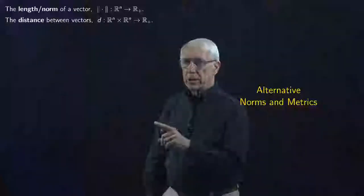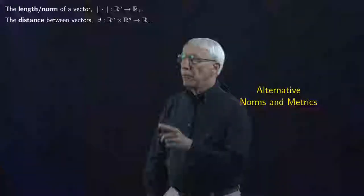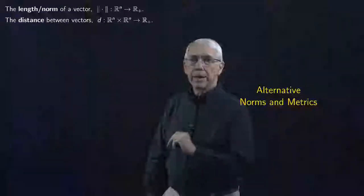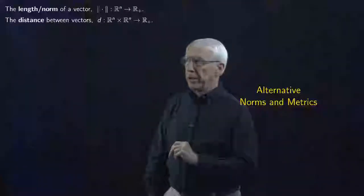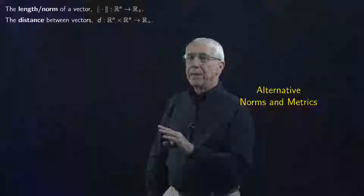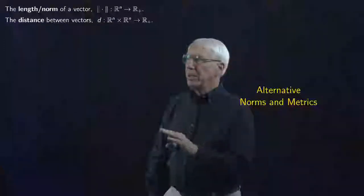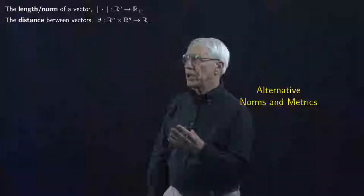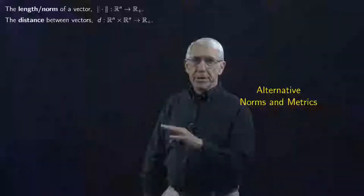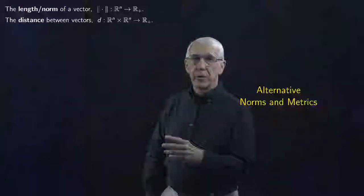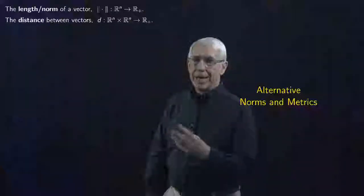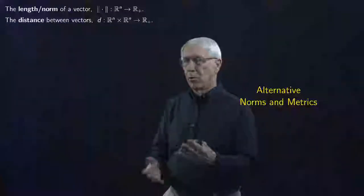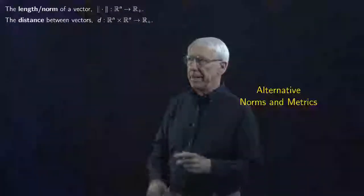The norm was a function from vectors in Rn, taking vectors in Rn into non-negative real numbers. Then we defined the idea of the distance between vectors in a natural, obvious way — just the norm of x minus y, or y minus x, it doesn't make any difference.